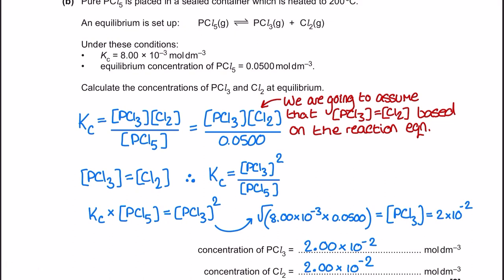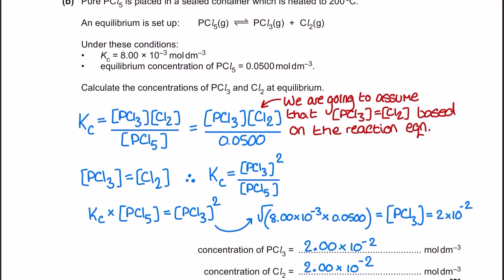Moving on to part B — this question initially seems very difficult because you're asked for two different concentrations from one Kc expression, which makes people think there's some horrific ratio involved, but it's not too bad. If you look at the reaction equation it really makes me think of the dissociation of a weak acid. I can see how PCl5 has nothing to do with a weak acid, but imagine if this was HA dissociating into H+ and A-. When we apply the weak acid approximation, we assume those two product concentrations would be the same as each other, and that's exactly what I'm going to do here.